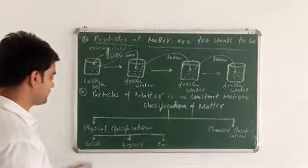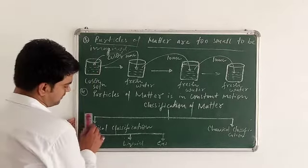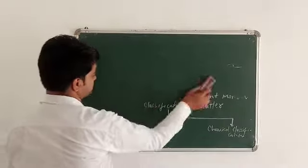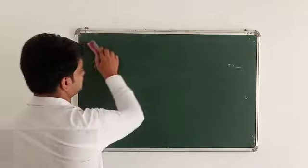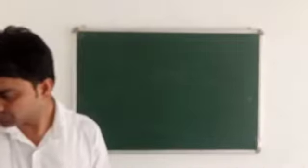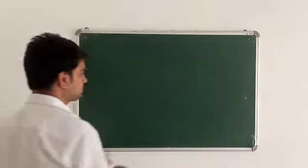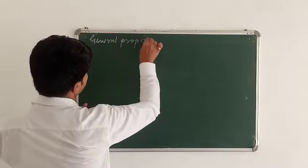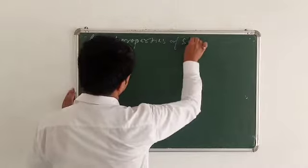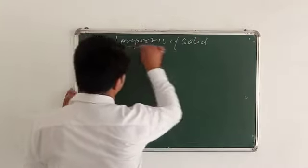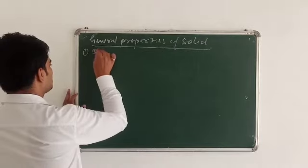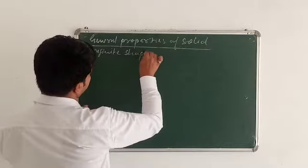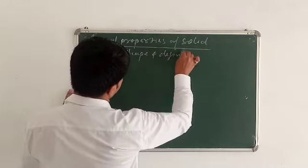I will talk about what is solid and what are the main features of the solid. So I will talk about several properties of the solid state. The first point is solids have a definite shape and definite volume.